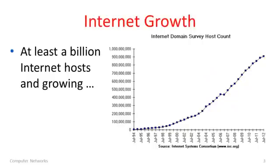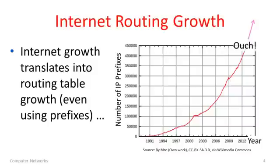Before we get into that, I'd like to give you a little bit of motivation. Here's a slide you've seen before about internet growth — we're growing very rapidly. There are now more than a billion internet hosts and growing. This slide shows the growth of the internet routing tables, which are the tables maintained in routers to forward packets. This table is also growing very rapidly — pretty much exponential growth. Right now as of about 2013, the number of IP prefixes in a router in the middle of the internet that has to be able to reach everywhere is around 450,000. That's a lot.